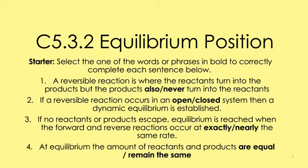So hopefully we've chosen the right words here. A reversible reaction is where the reactants turn into the products, but the products also turn into the reactants. If a reversible reaction occurs in a closed system, then a dynamic equilibrium is established. If no reactants or products escape, equilibrium is reached when the forward and reverse reactions occur at exactly the same rate. At equilibrium, the amount of reactants and products remains the same — they're not necessarily equal, but they do remain the same.